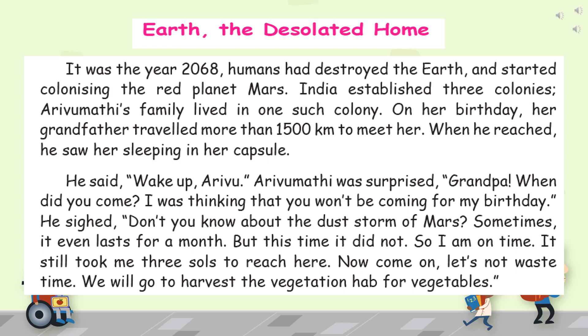It is just an imagination in this story about what happens after a few years — that is after 2068. This is just an imagination that the writer has shared with us. Let's see the lesson: Earth, the desolated home. What is the meaning of desolated? Desolated means there are no living inhabitants — where there are no inhabitants living, everything is destroyed.